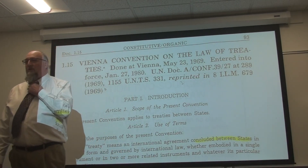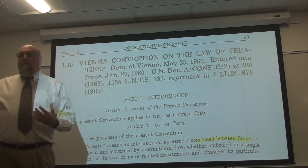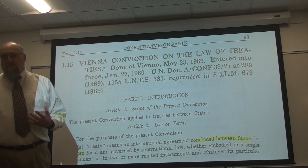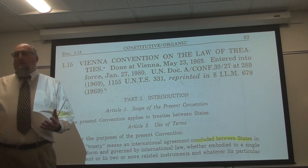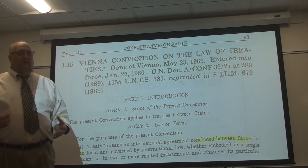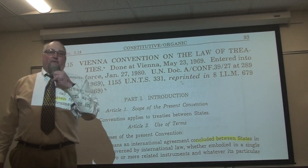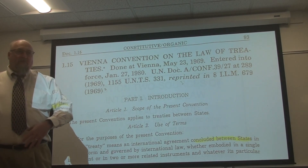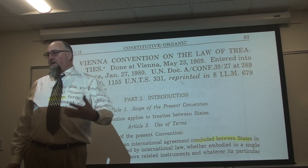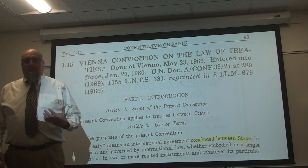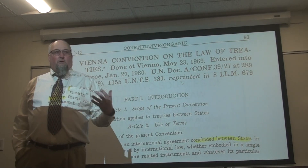This document sets the ground rules for establishing how treaties are made, who has the power in a state to make a treaty, when treaties are ratified, when parts of treaties are valid or invalid, how treaties can be modified, and what happens if a country is not following the terms of a treaty.